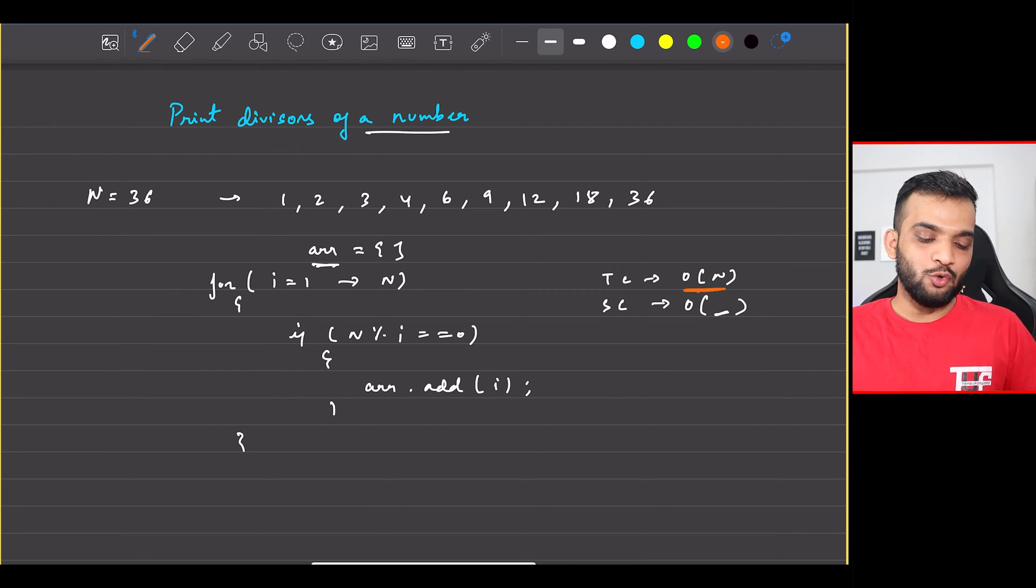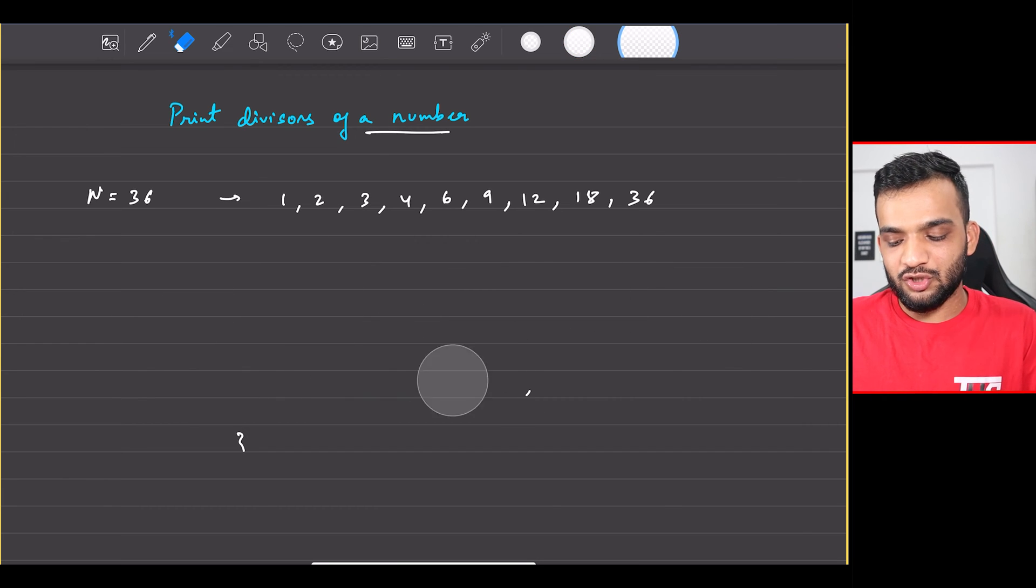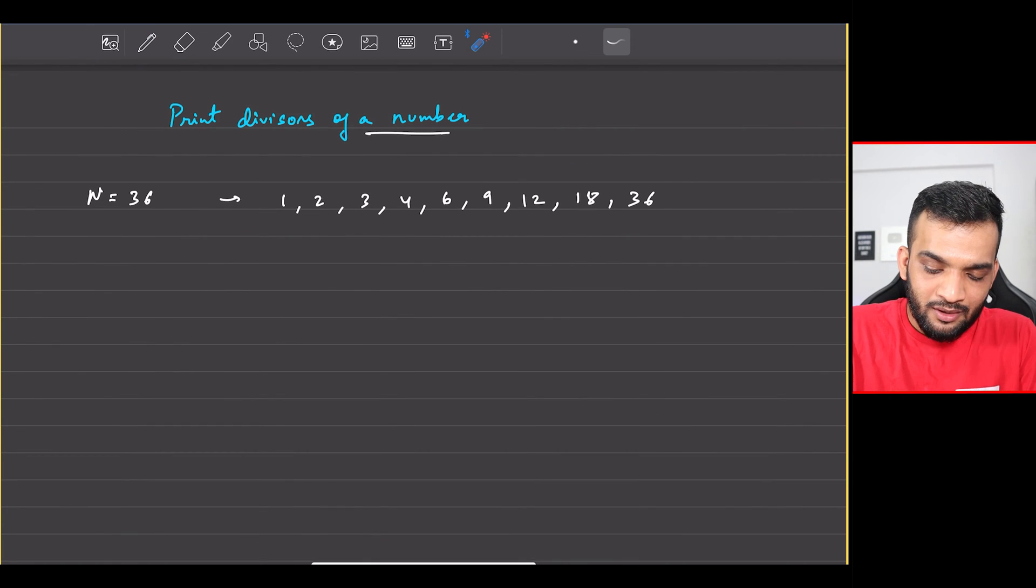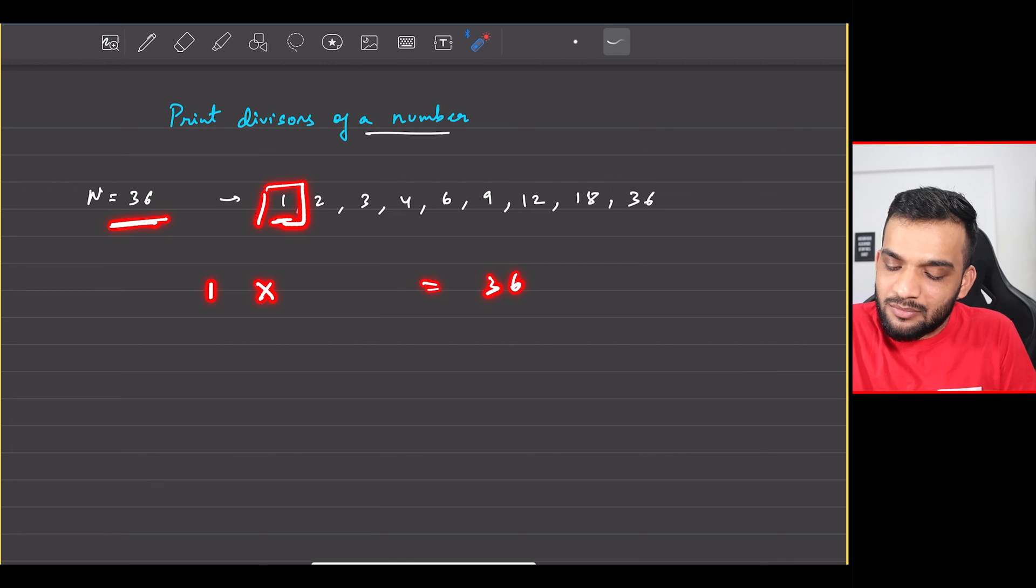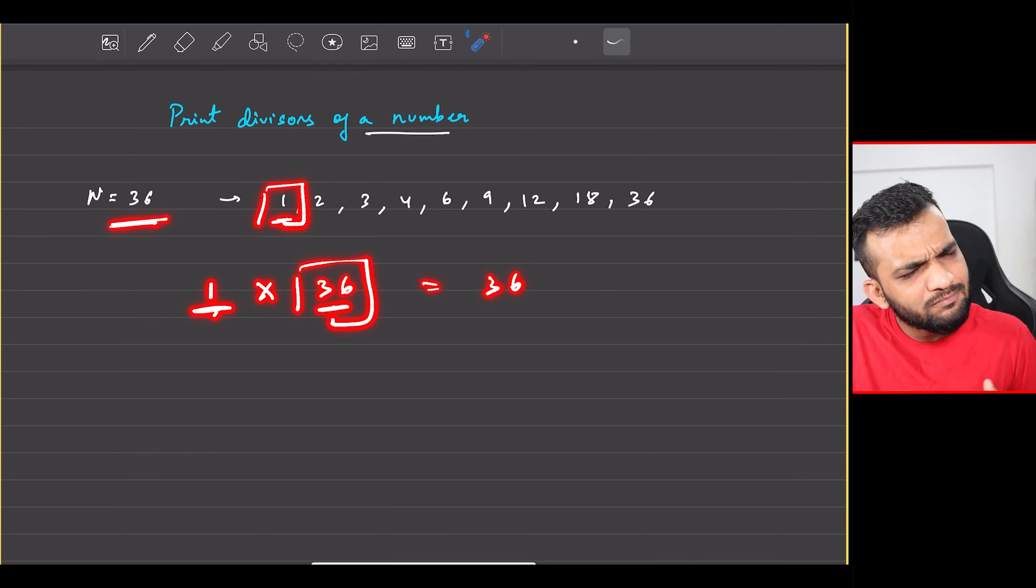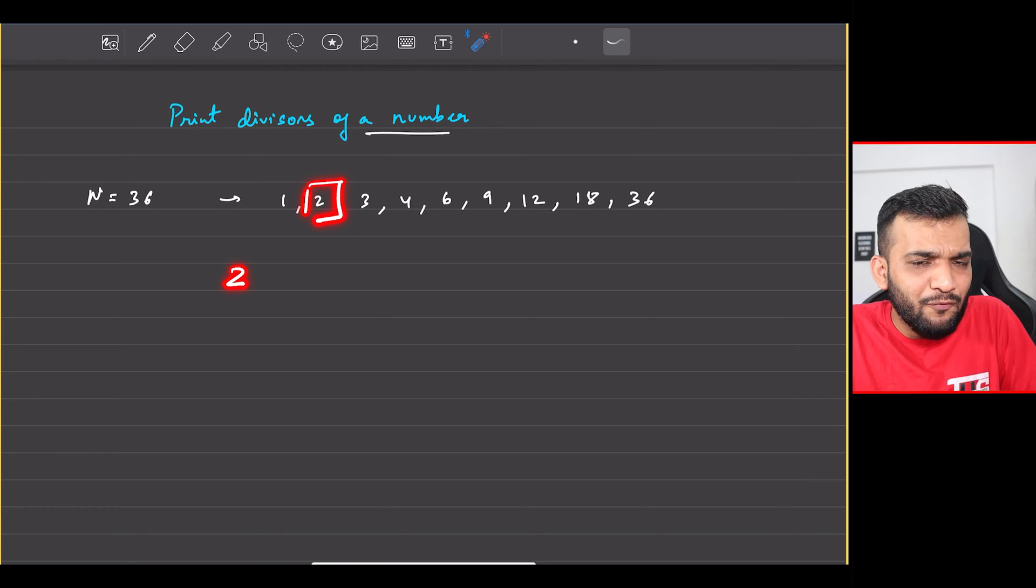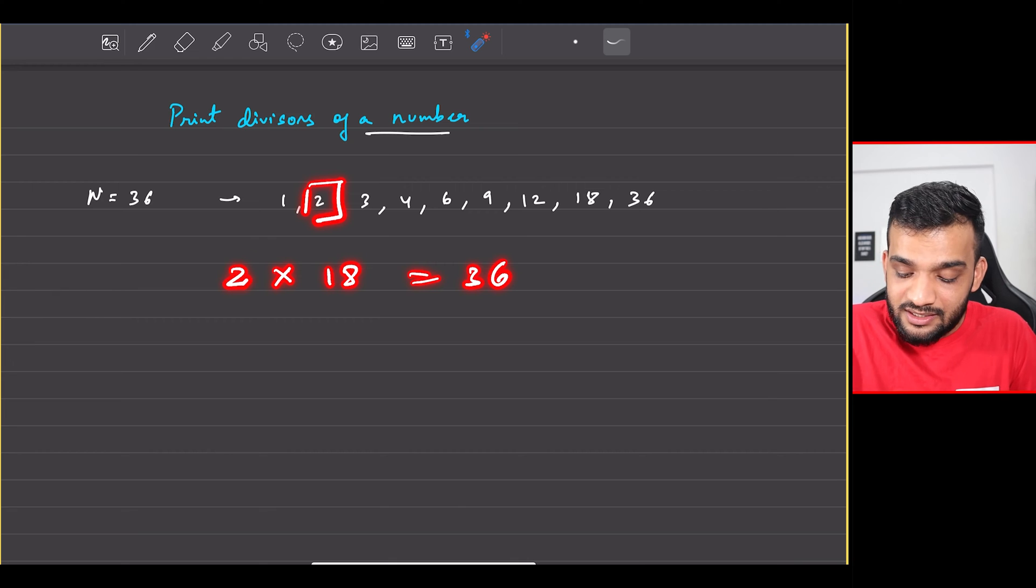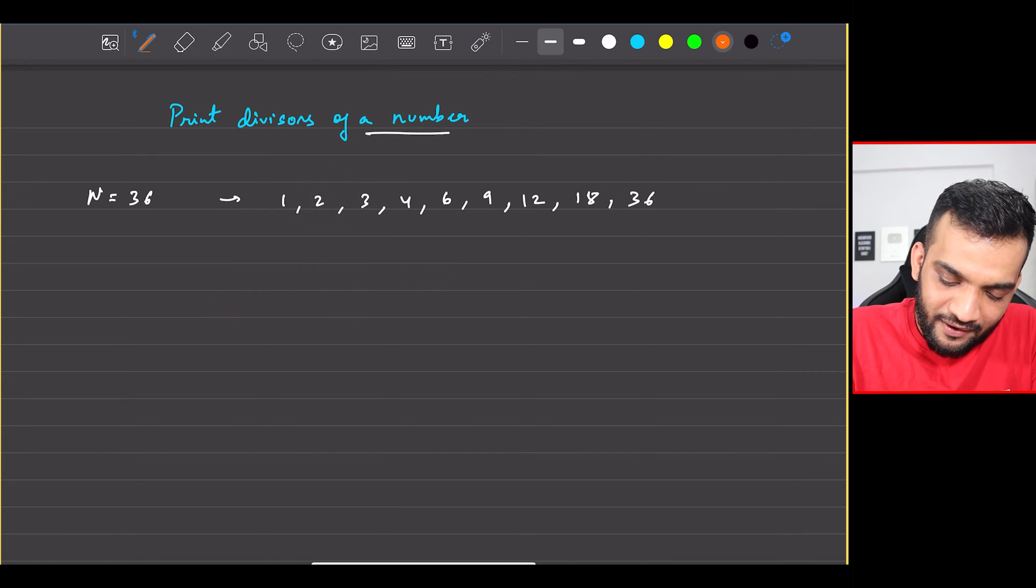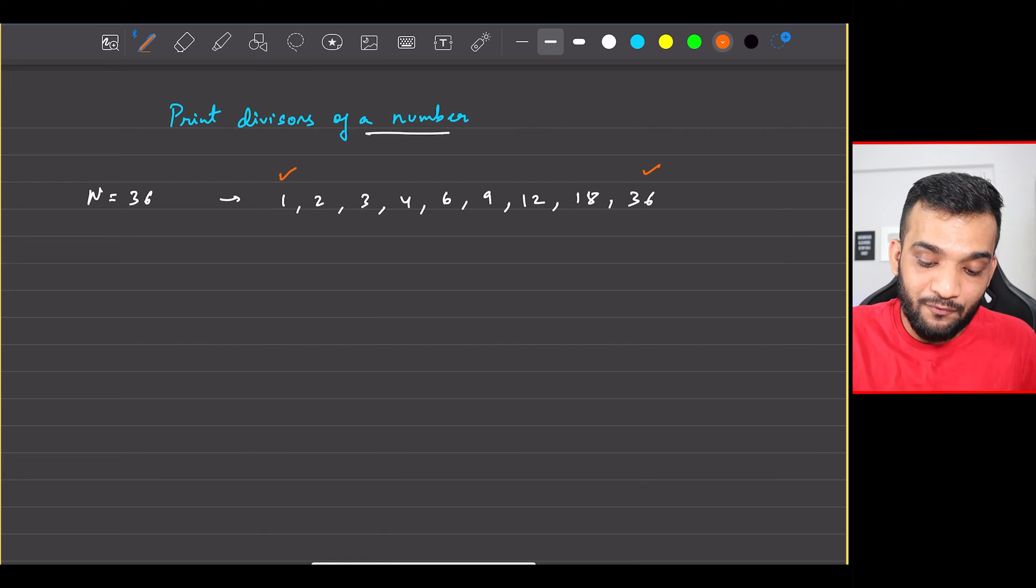But obviously the interviewer will not be happy with the time complexity and will ask you to optimize it. Now this is where the optimization will come in and you'll have to observe minutely. So what do you need to observe? First of all, let's observe something. If one is dividing 36, one should be multiplying by something to get 36, and that is 36. So if one is a divisor, the number that it is getting multiplied to is another divisor. If two is a divisor, it's definitely getting multiplied with something, that is 18. If two is a divisor, the number that it is getting multiplied to will be another divisor. So can I say if I can figure out one, I can also figure out 36? If I can figure out two, I can also figure out 18? If I can figure out three, three into what? Twelve. If I can figure out four, I can figure out nine as well.